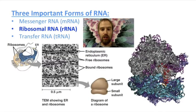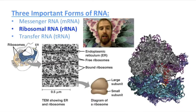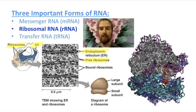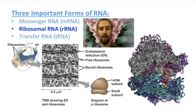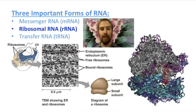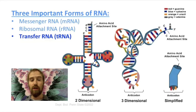Ribosomes are often referred to as the construction workers of the cell, because these molecules are responsible for building proteins. Ribosomes themselves are made largely of RNA — a kind of highly structured RNA called ribosomal RNA, abbreviated rRNA. Ribosomes are found floating freely in the cytoplasm, but when constructing a protein, they attach themselves to the endoplasmic reticulum just outside the nucleus. Each ribosome is made of two parts, or subunits, called the large subunit and the small subunit, which fit together sort of resembling a hamburger bun.